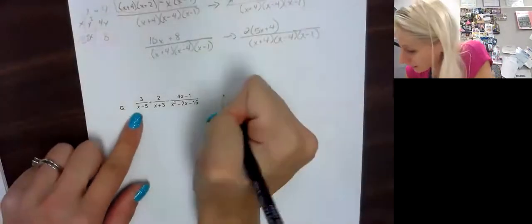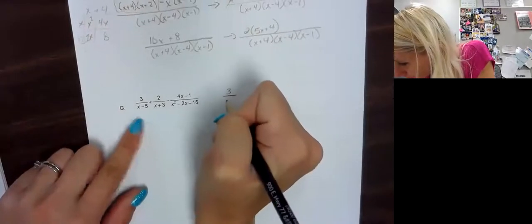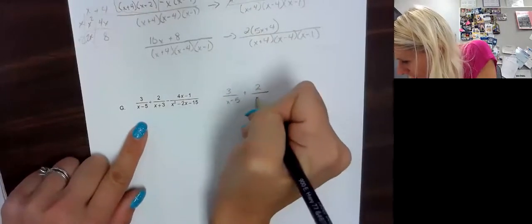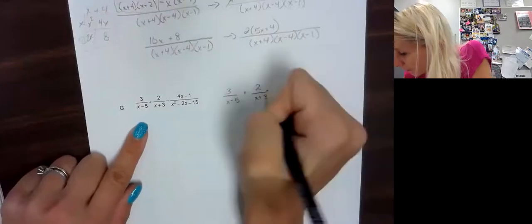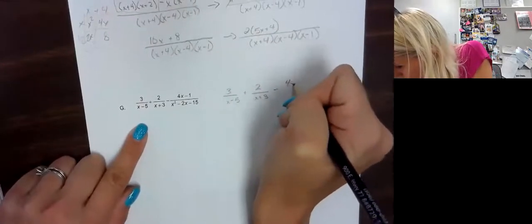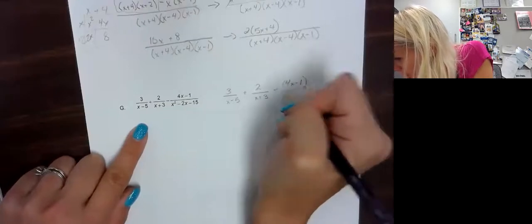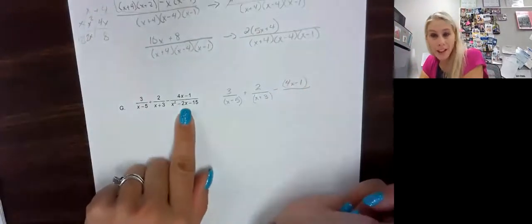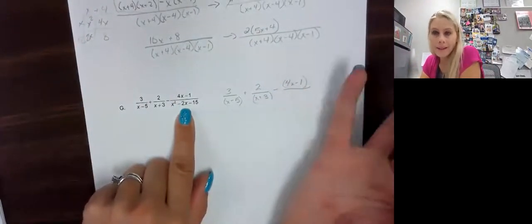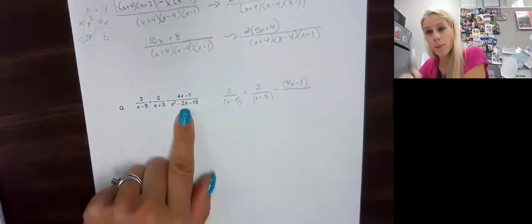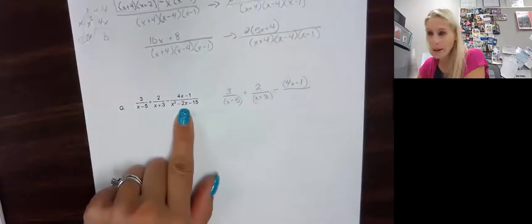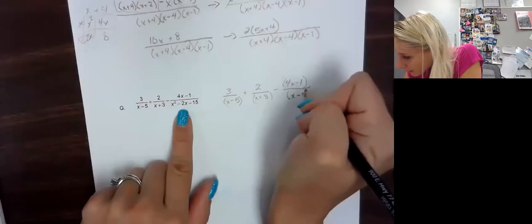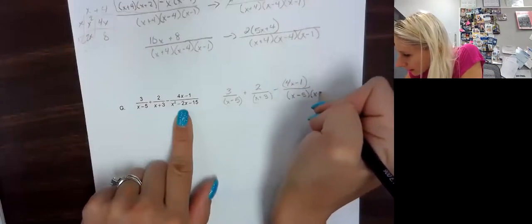First job is to factor. So we have 3 over x minus 5 — can't be factored — plus 2 over x plus 3 — can't be factored — minus 4x minus 1, remember this is a group, all over the third denominator. This one we can factor — I'll factor it quickly. If you want to pause and try it, go ahead. This would be x minus 5 times x plus 3.